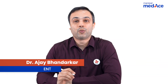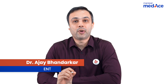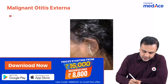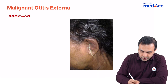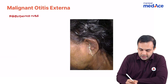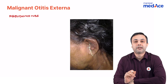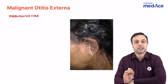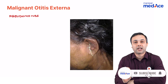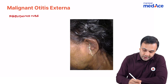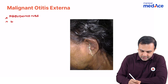The key points regarding malignant otitis externa: the first and foremost is Pseudomonas aeruginosa, which is the causative organism. Apart from that, there can be fungal infections — Mucor and Aspergillus — which can also produce malignant otitis externa.